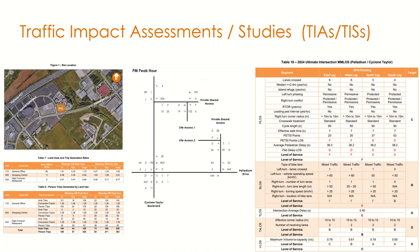Once the scope is agreed on, traffic data collection is initiated to analyze and examine existing traffic conditions and transportation challenges, such as high delays at intersections or extremely long queues at specific locations. If there are issues to be addressed through mitigation measures, the professional would apply those mitigation measures and carry them forward with the analyses.